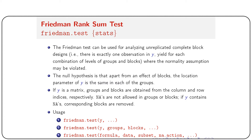The function is called friedman.test from the stats package. You can use it three ways: passing only y, passing y stratified by groups and blocks, or using a formula format. The formula format is more convenient compared to the others.